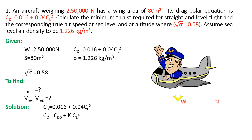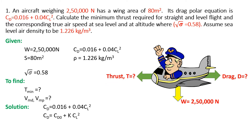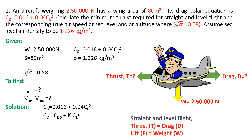Now consider an aircraft flying in steady level flight. The weight of the aircraft is 250,000 Newton. Thrust is the force which moves the aircraft in the forward direction and drag is the pull force acting opposite to the thrust. So at straight and level flight, thrust equals drag and lift equals weight.